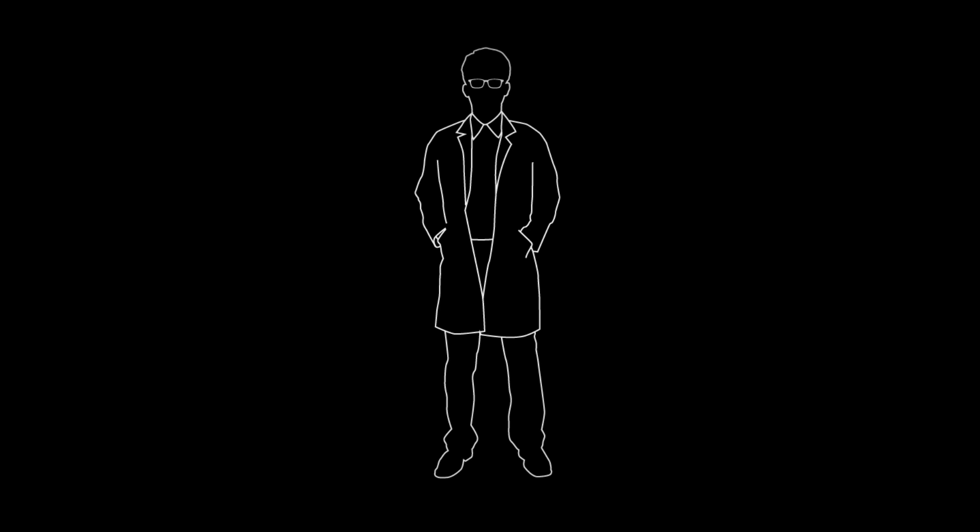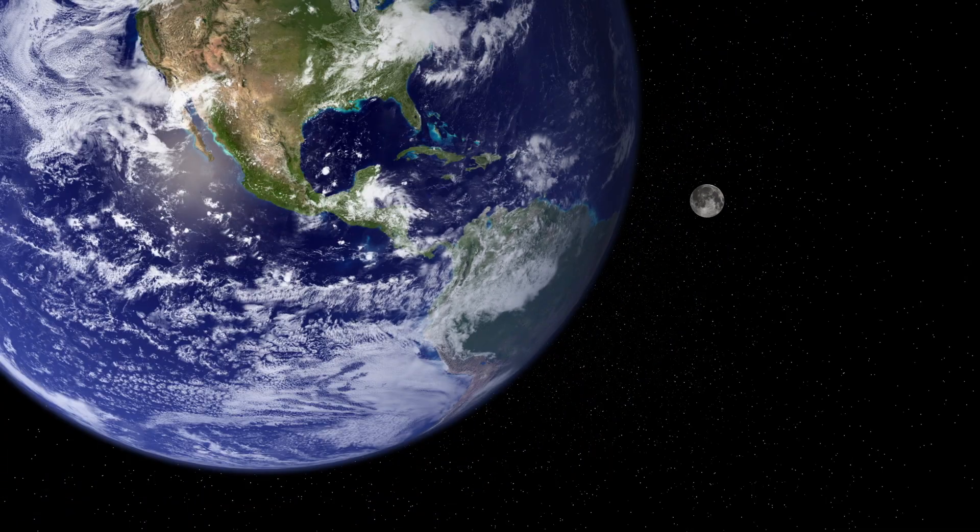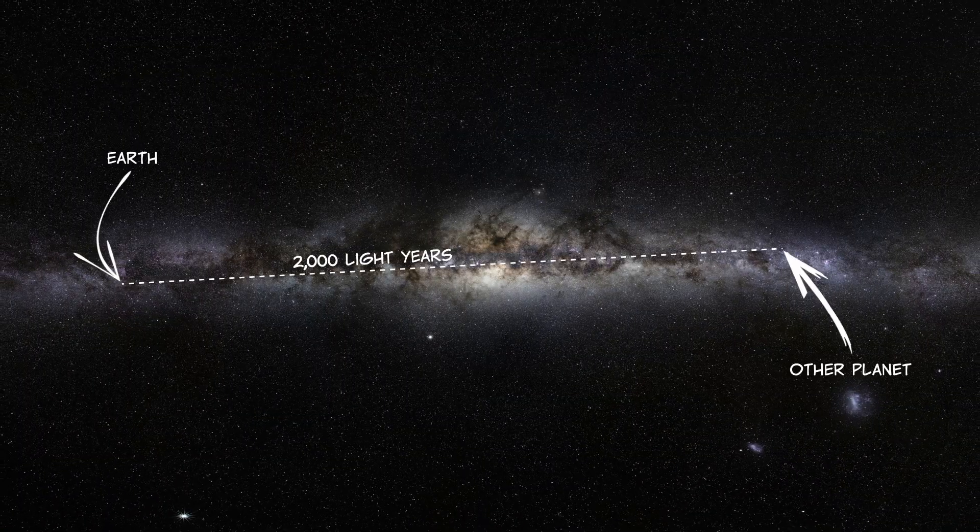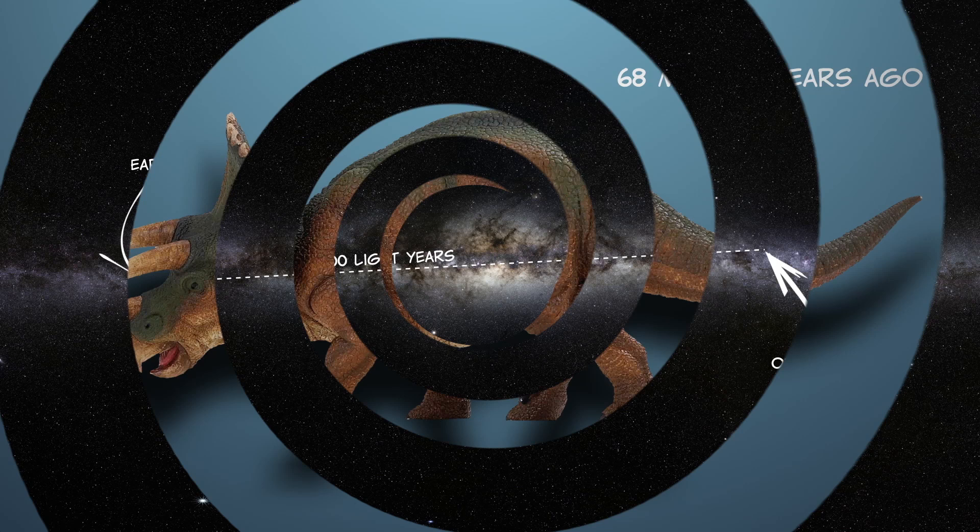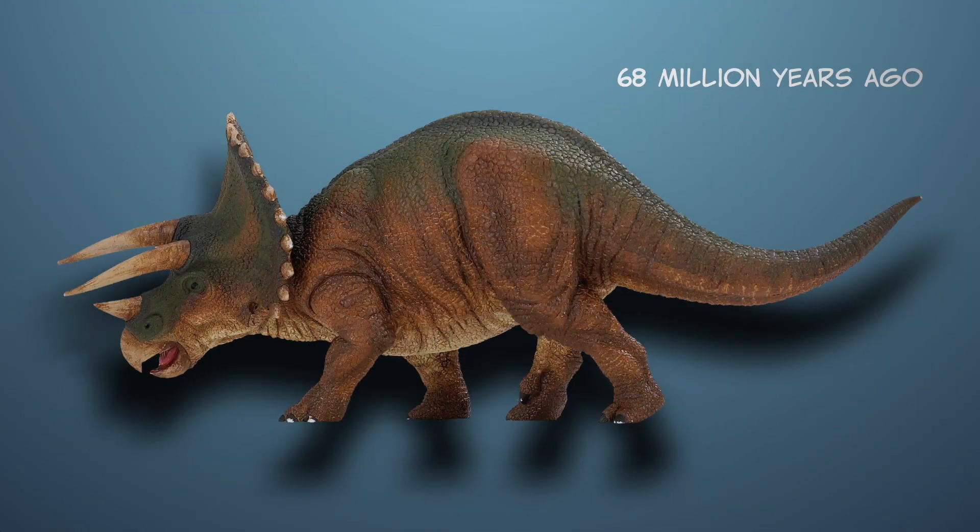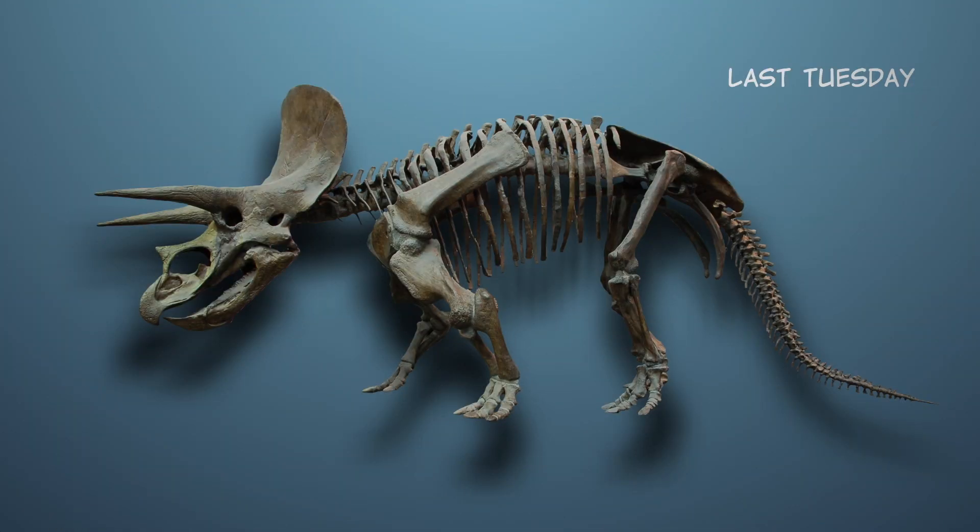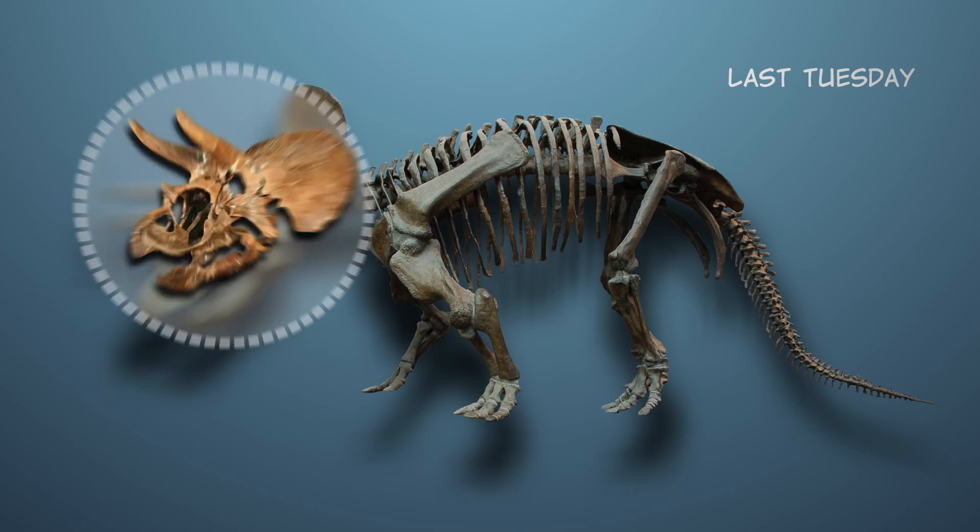A lot of times scientists can't actually observe the things they want to observe because they are impossible for humans to actually see. For example, we can't travel thousands of light years to look at other planets, and we can't go back in time and observe dinosaur behavior. Instead, we can look for things we can observe that tell us about the thing we can't.